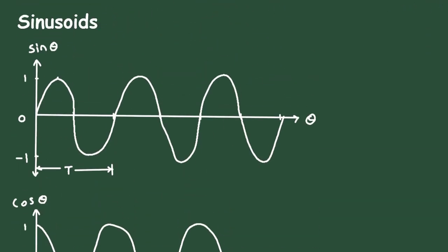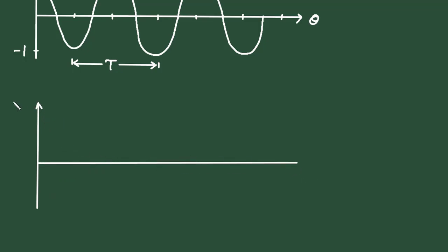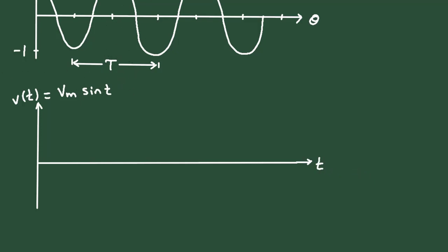Now we will see sinusoids. Before seeing sinusoids, let us take one more waveform of sinusoidal voltage V of t. Let us say this is a sinusoidal voltage: V of t is equal to Vm sin omega t. First we will see sin as a function of omega t, then we will understand the difference. Here on this x-axis this will be t, and V of t is equal to Vm sin omega t.